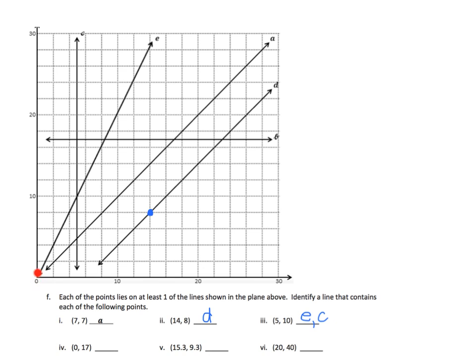0 and 17. Okay, 0 means for x means that it's on the y axis. So this is 10, 12, 16, 18. There we go. 17 is on line B.